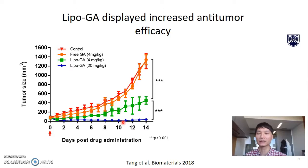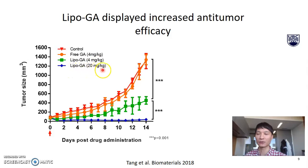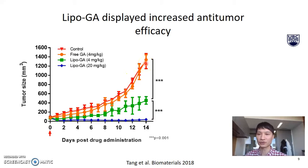We initiate only one dose of either saline as a free control, free GA at 4 milligrams per kilogram, lipo-GA at 4 milligrams per kilogram, or lipo-GA at a higher dose of 20 milligrams per kilogram. The free drug is not really effective, as the tumor growth curve overlaps with the saline control.